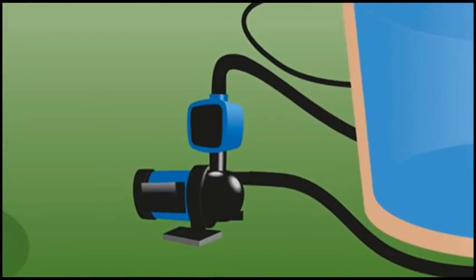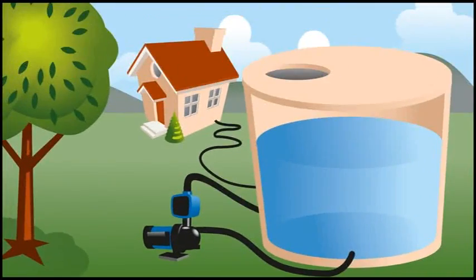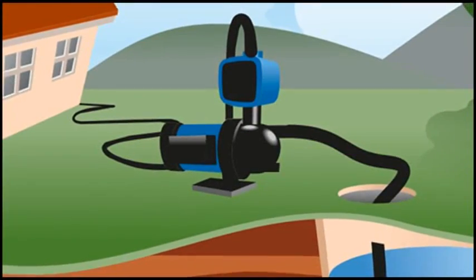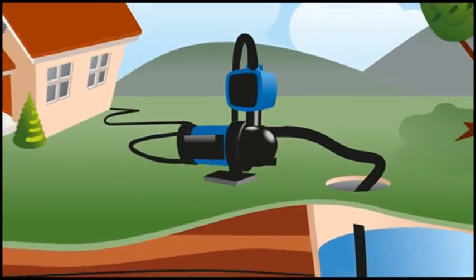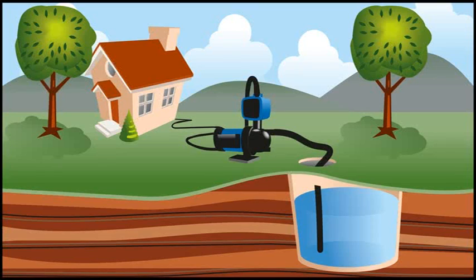Flooded suction describes when the water level in a tank is above the pump inlet. Suction lift means that the water level is lower than the pump. It applies to underground water storage tanks that are serviced by an above-ground pump.